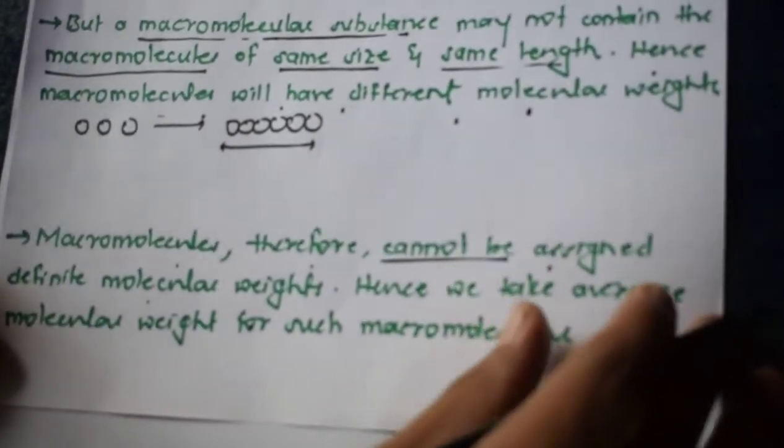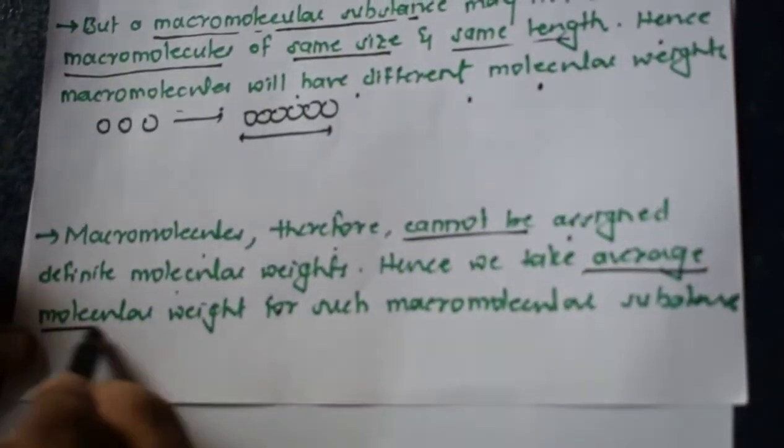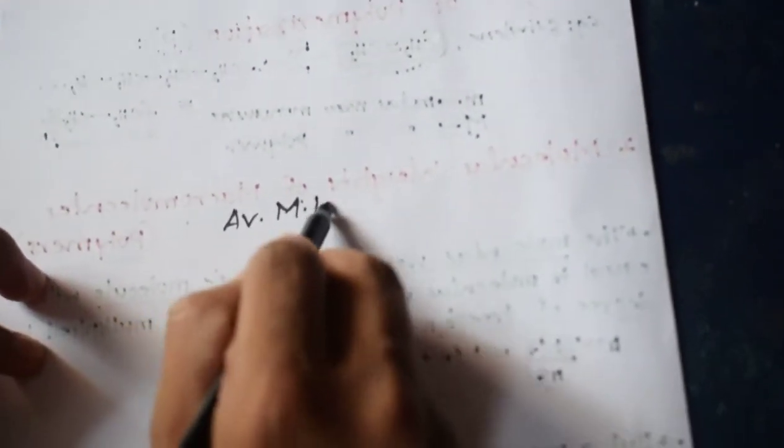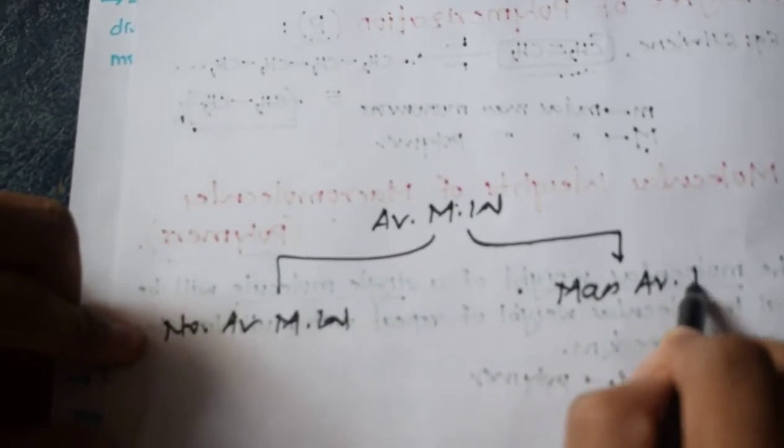Since macromolecules cannot be assigned a definite molecular weight, we take an average molecular weight for such macromolecular substances. The average molecular weight can be divided into two types: one is number average molecular weight, denoted by Mₙ, and the other is mass average molecular weight, denoted by Mₘ.